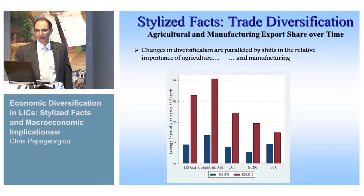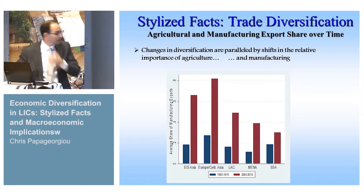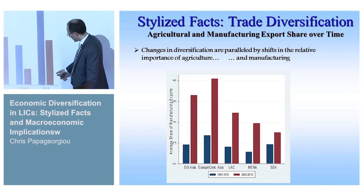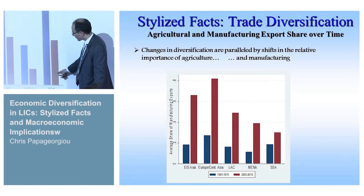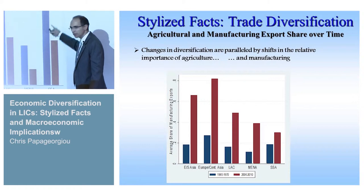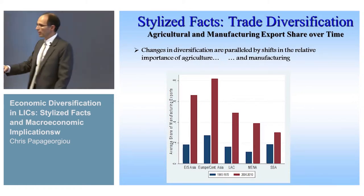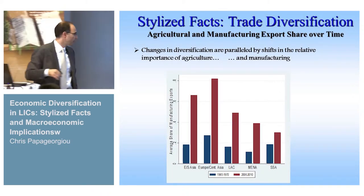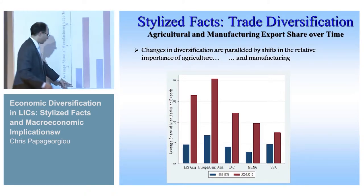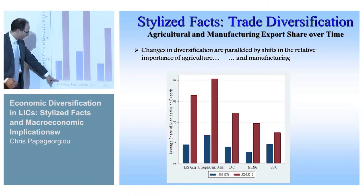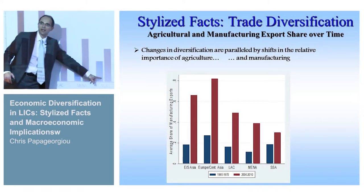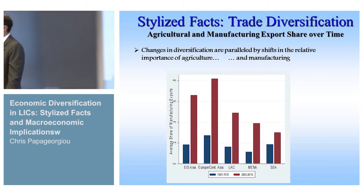Changes in diversification are paralleled by shifts in the relative importance of agriculture. We show the share of agriculture in Sub-Saharan Africa from 2006–2010 compared to 1965–1970, and there is a drastic decrease in the share of agriculture, with the opposite occurring in manufacturing. In East Asia, the share of manufacturing in 1965 was very small and almost quadrupled, though that is not as much the case in Sub-Saharan Africa — something Governor Dulo also indicated.